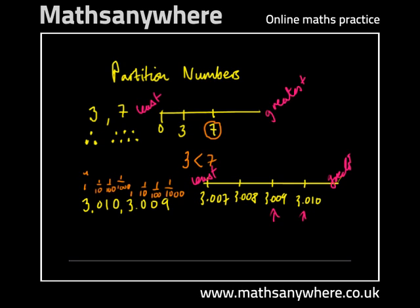The greatest of the two numbers is three and ten thousandths. The number with the least value is three and nine thousandths. We can write out that 3.009 is less than 3.010.